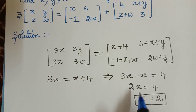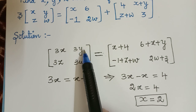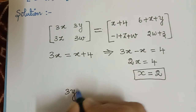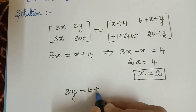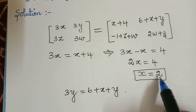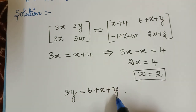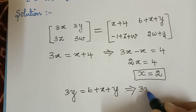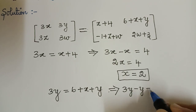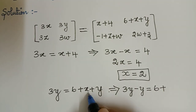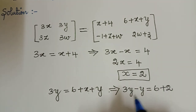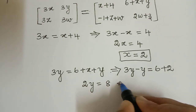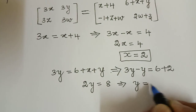Then by comparing the second elements, we get 3y is equal to 6 plus x plus y. Now we can substitute the value of x over here. When we take y to the left hand side, we get 3y minus y equals 6 plus 2. So 2y equals 8, and therefore the value of y is equal to 4.